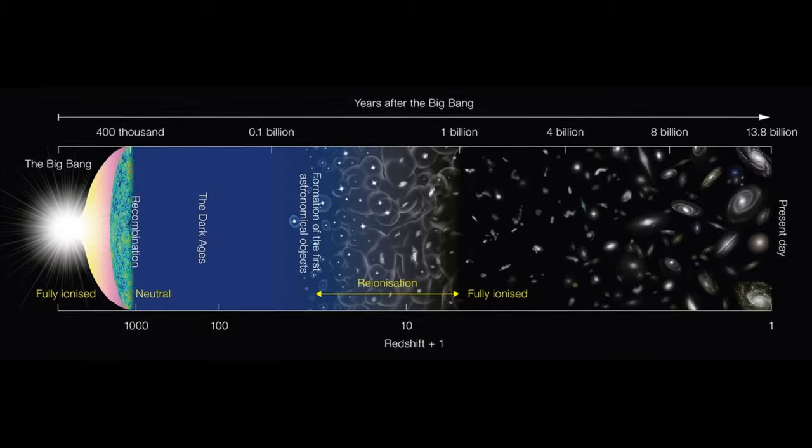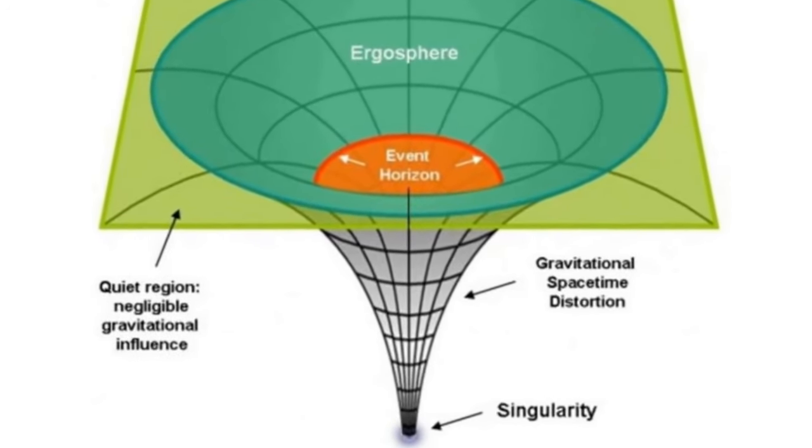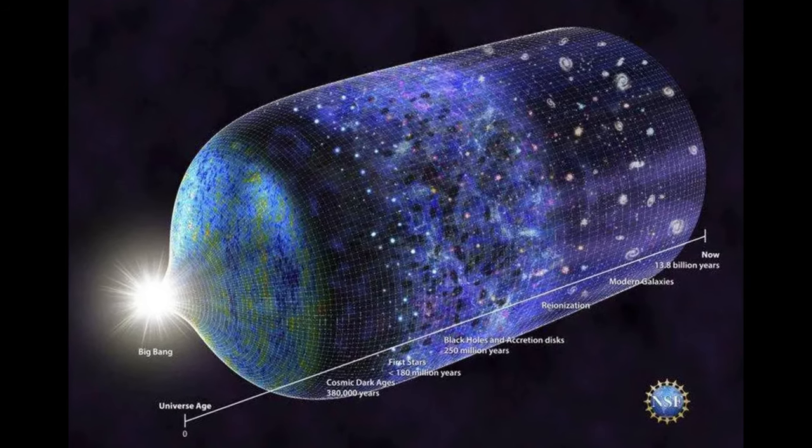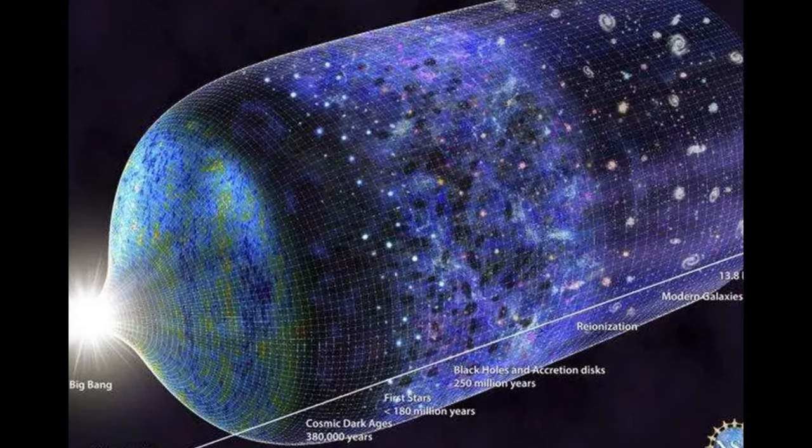It's believed that there was an initial singularity before anything else. This is a gravitational singularity predicted by general relativity to have existed before the Big Bang and thought to have contained all the energy and space-time of the universe.